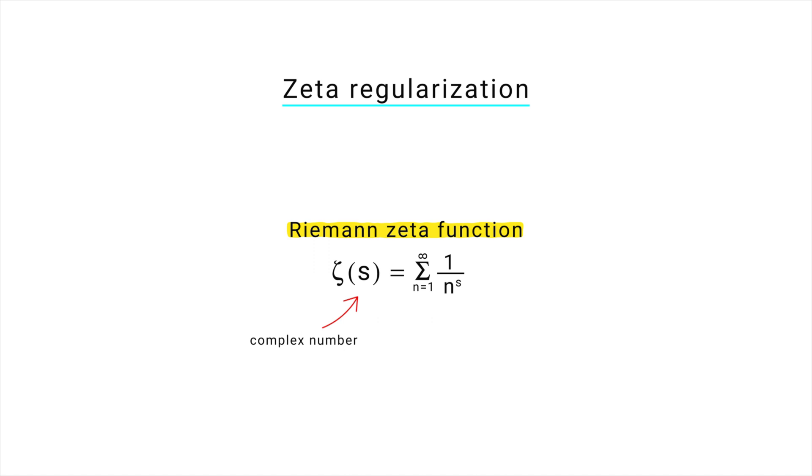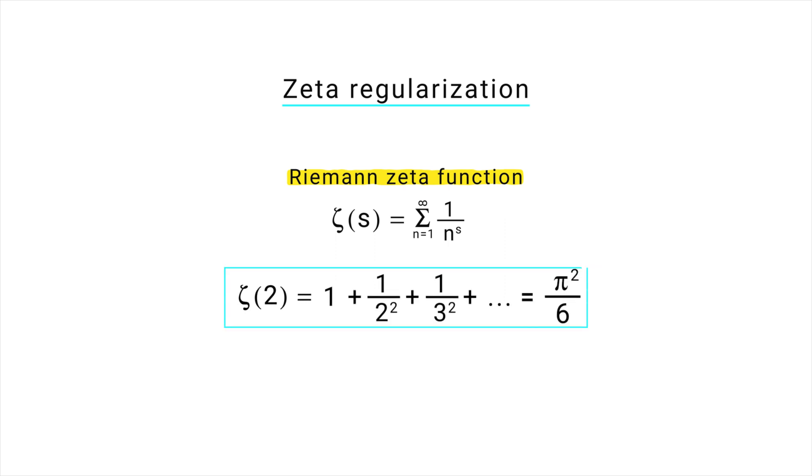Zeta regularization is based on a special function called Riemann zeta function. The zeta function takes a complex number s as its input and returns another complex number as its output. For example, which is another beautiful result that relates pi to the sum of squares.